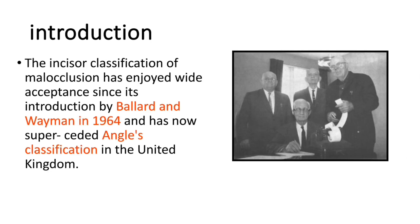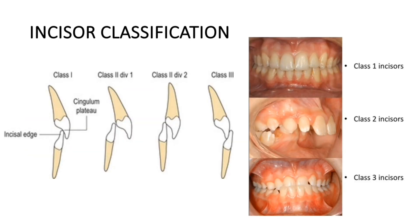Who introduced this classification? The incisor classification of malocclusion has enjoyed wide acceptance since its introduction by Ballard and Wayman in 1964, and has now superseded Angle's classification in the United Kingdom.